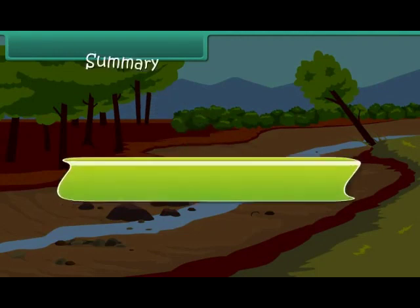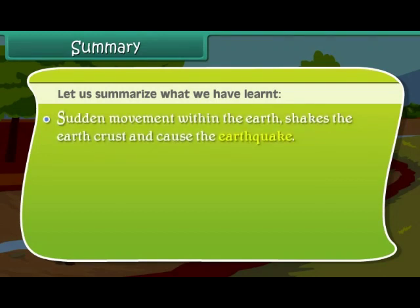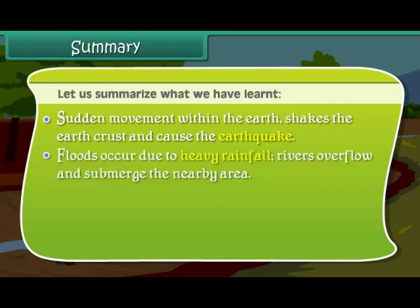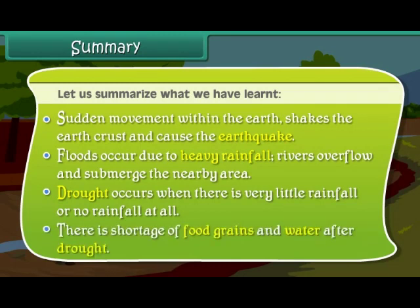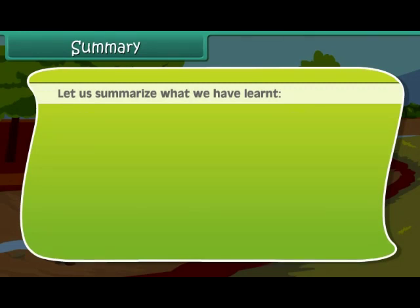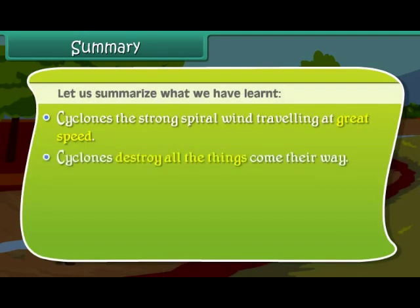Let us summarize what we have learnt. Sudden movement within the earth shakes the earth's crust and causes earthquakes. Floods occur due to heavy rainfall, causing rivers to overflow and submerge nearby areas. Drought occurs when there is very little or no rainfall, leading to shortage of food grains and water. Cyclones are strong spiral winds travelling at great speed that destroy everything in their way and occur specially in coastal areas.